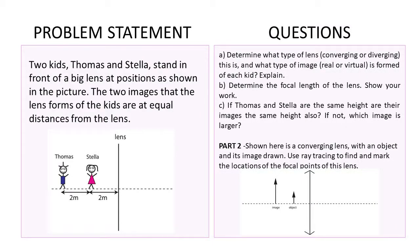Okay, here's the problem. Remember to pause the video so you can copy it so that it's easier for you to follow along. Two kids, Thomas and Stella, which I'll label T and S, stand in front of a big lens at positions as shown in the picture. The two images that the lens forms of the kids are at equal distances from the lens.